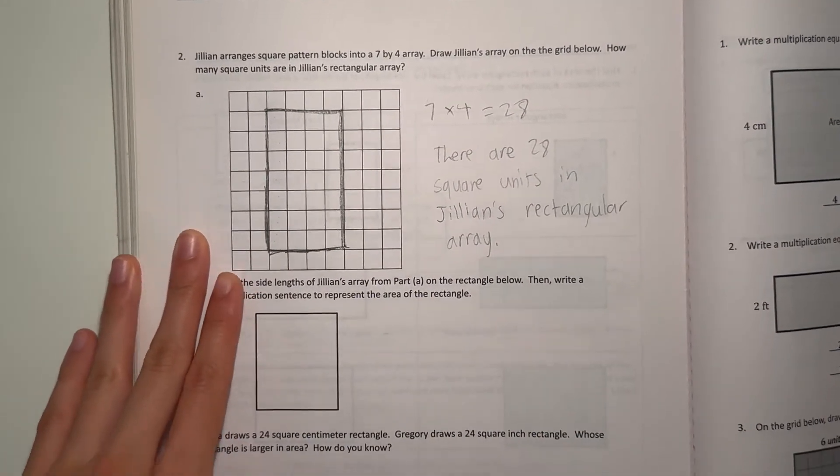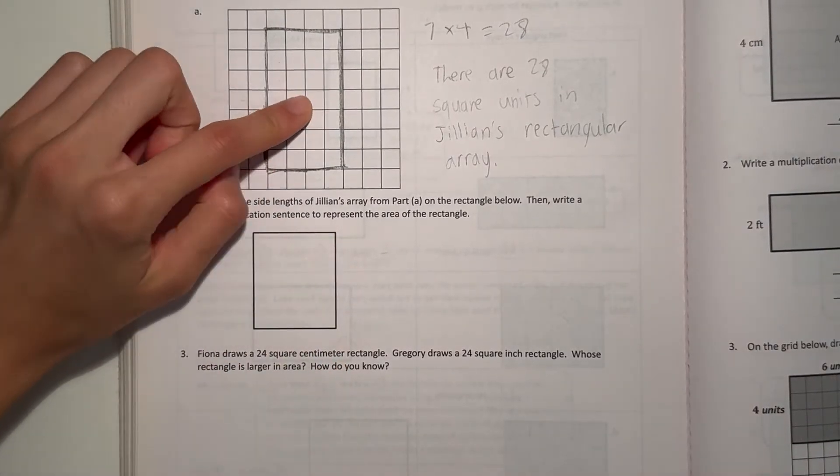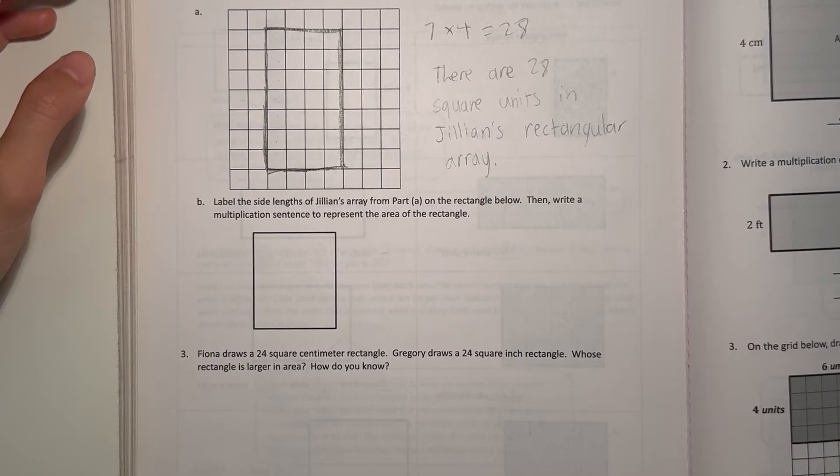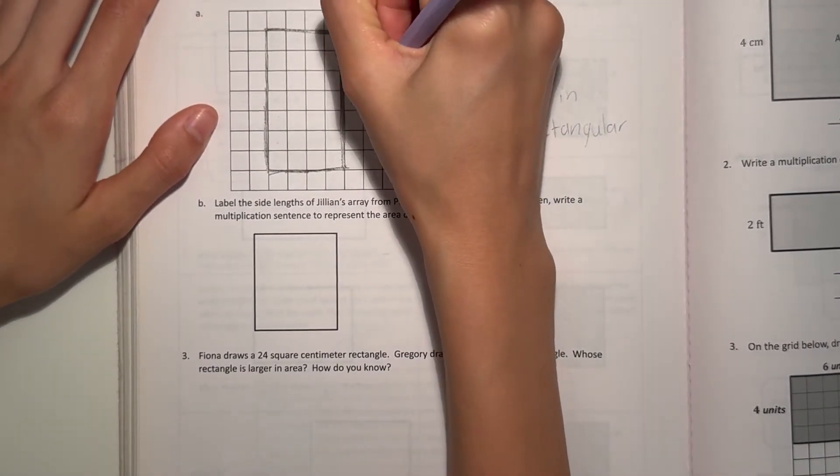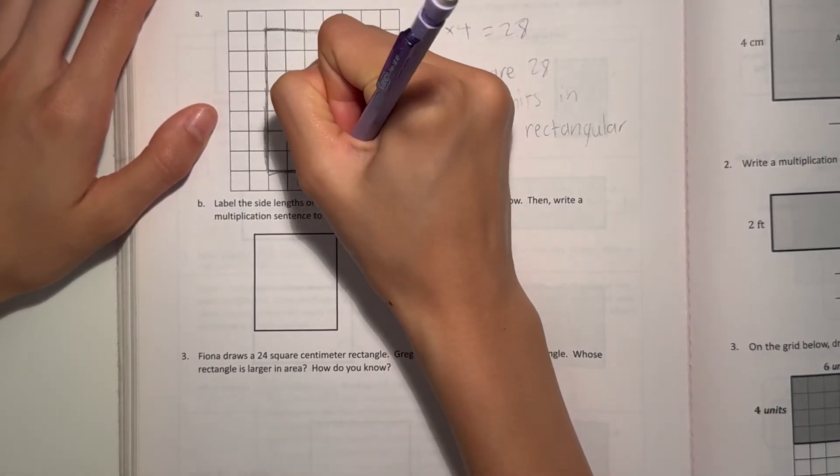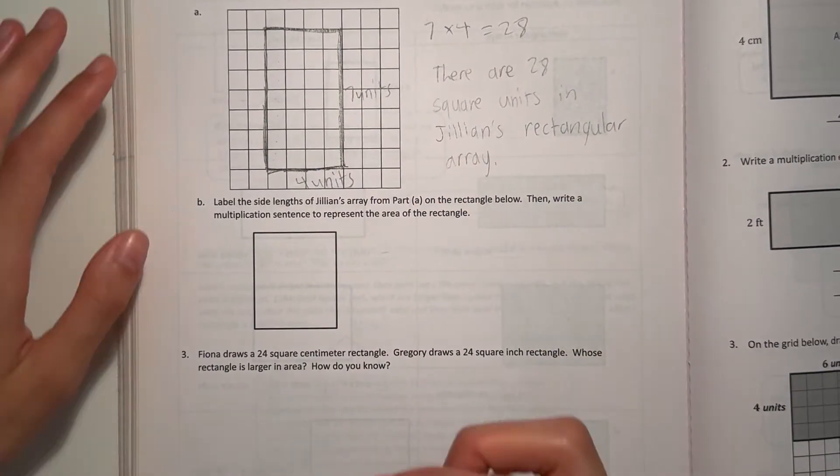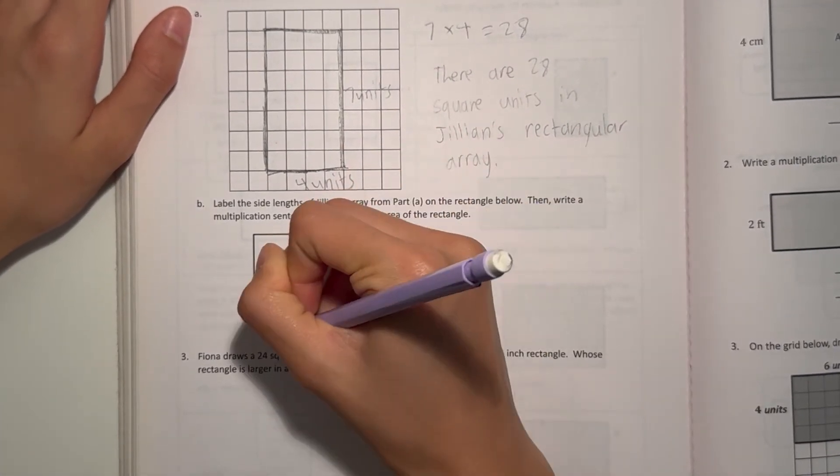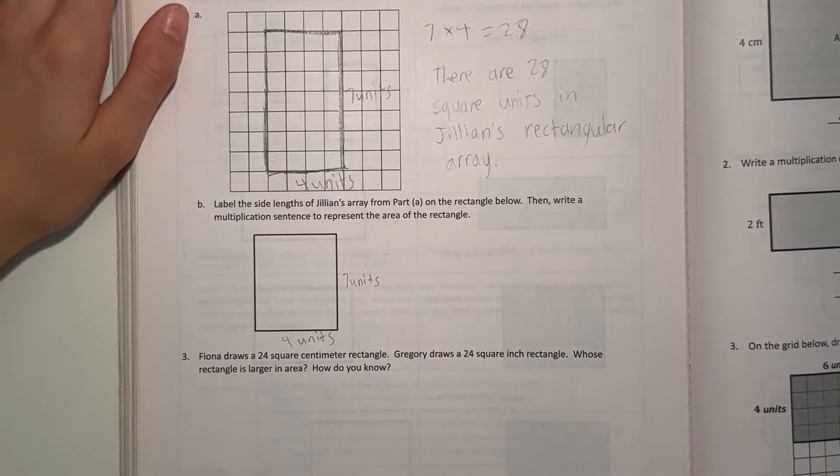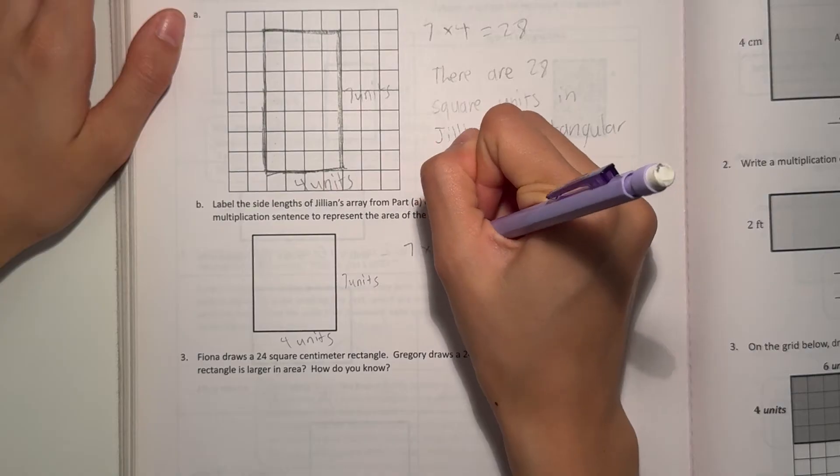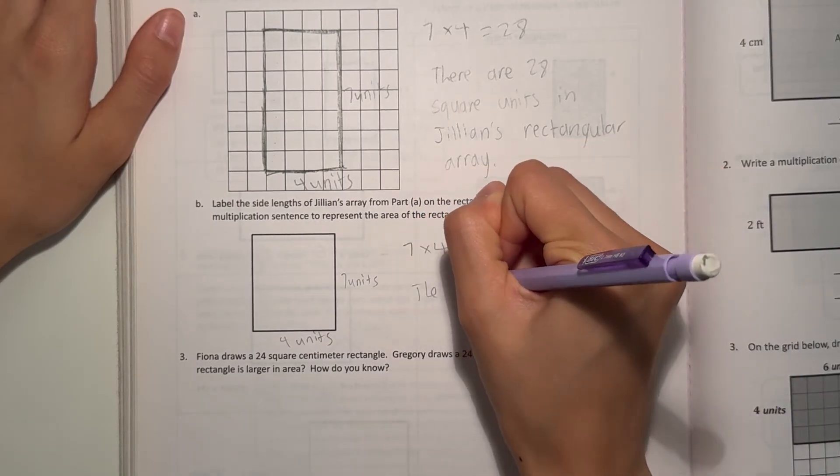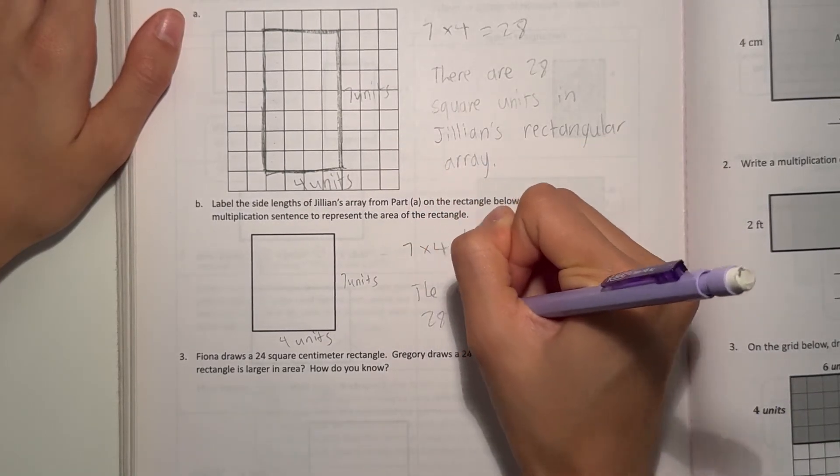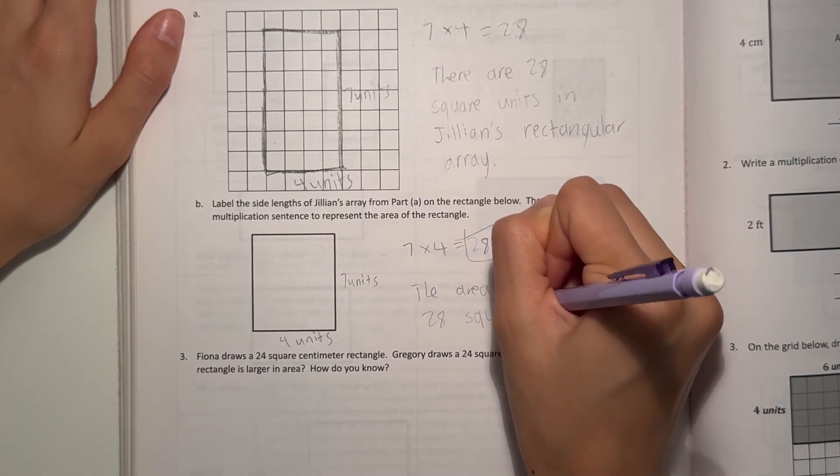Alright, and B. Label the sidelines of Jillian's array from part A on the rectangle below. Then write a multiplication sentence to represent the area of the rectangle. Alright, so the sidelines, it's 7 units by 4 units. So we're moving that sideline down here. So it's 7 units and 4 units. And to find the area that's length times width. So that's 7 times 4 equals 28. So 28 is our answer. The area is 28 square units.